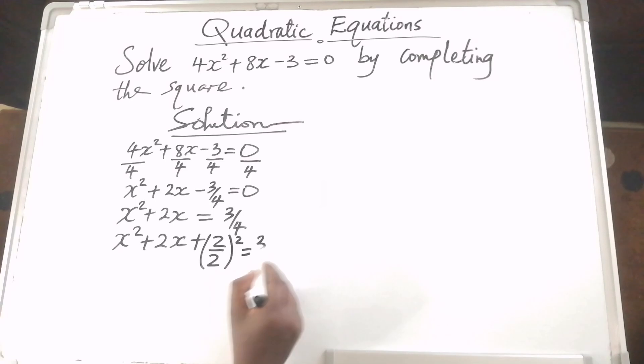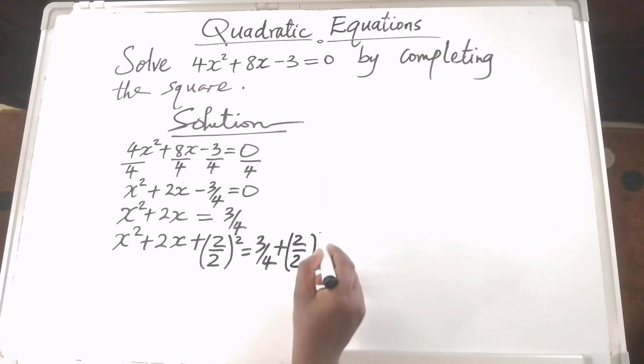It will be equal to 3 over 4 plus the same value so that both sides are affected the same way. This gives us x squared plus 2x plus 1, since 2 divided by 2 squared is 1, equals 3 over 4 plus 1.